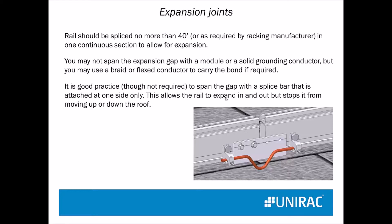Metal on the roof is going to expand and contract. We say that you should put no more than 40 feet of rail on the roof continuously, and then you have to allow for expansion. An expansion joint is basically: stop the rail, move over half an inch, and start again. You may not put a module over the top because that would stop it from expanding and contracting. It's good practice to put a splice bar in but only attach it on one side — that will stop the rail from moving laterally but will still allow it to expand in and out. This splice bar used in this way is not bonding the rail, so you will have to jumper across that with bare copper wire or a braid, bent so that it can still expand and contract.